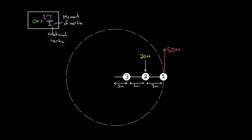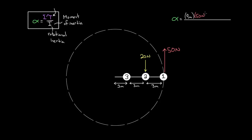We'll say that the angular acceleration equals the net torque divided by the moment of inertia. To find the net torque with two forces, find the torque from each one individually and add them up. But it's not gonna be 50 minus 20 — these are torques, not forces. The 50 Newtons must be multiplied by its R. The R is always from the axis of rotation at the center to where the force is applied — that's 9 meters — so the torque from the 50 Newtons is 9 times 50.